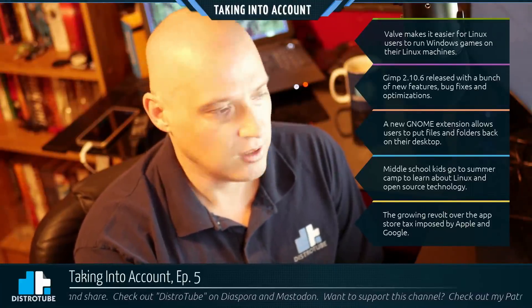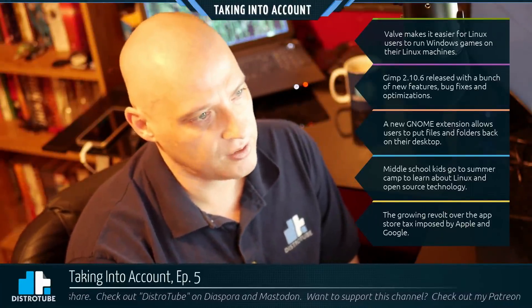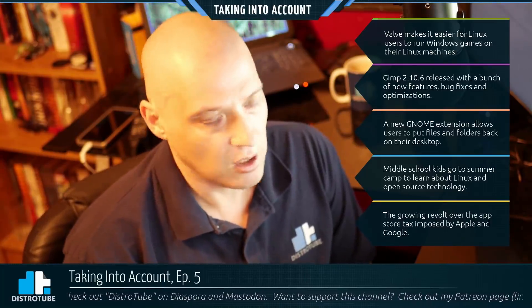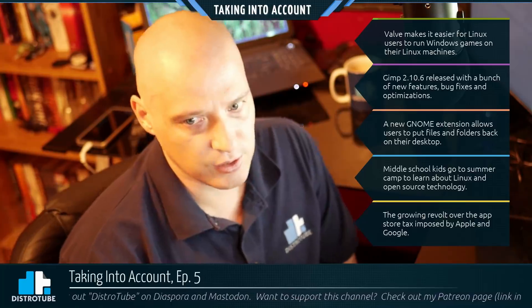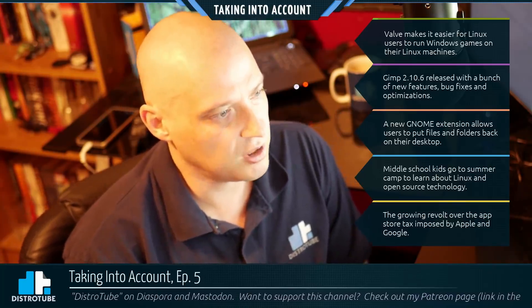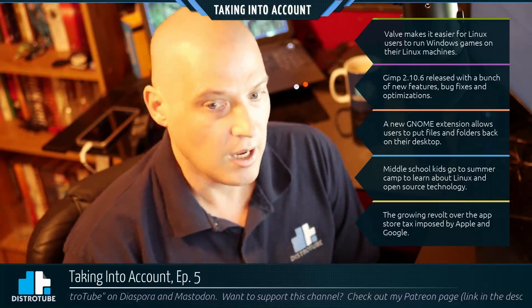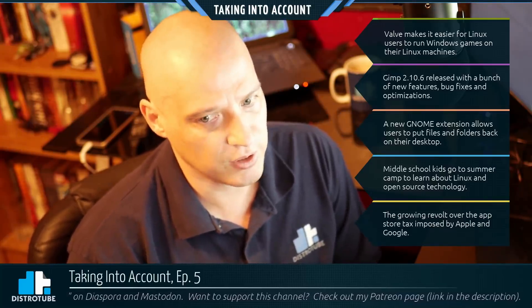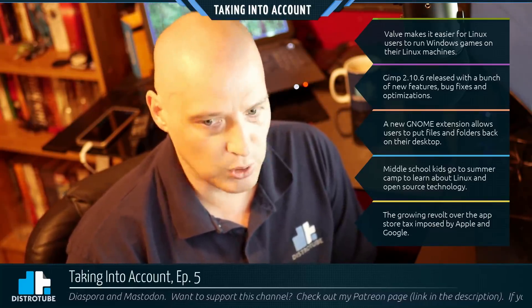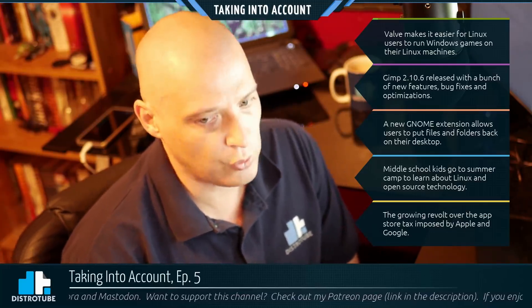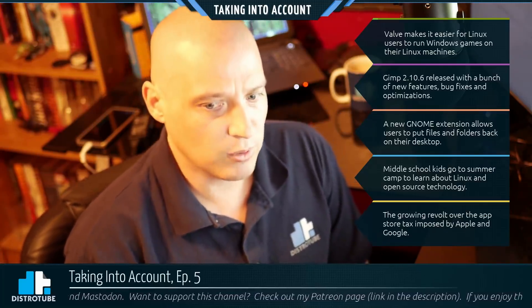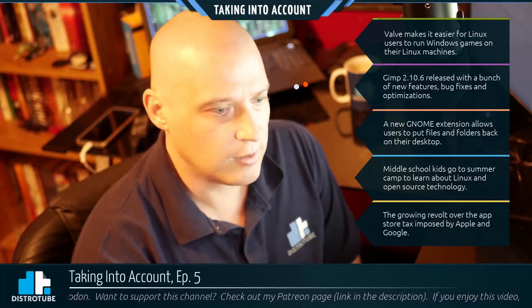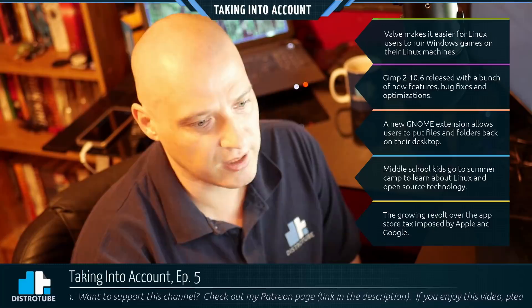This week on Taking Into Account: Valve makes it easier for Linux Steam users to run Windows games on their Linux machines. Also, GIMP 2.10.6 was released with a bunch of new features, bug fixes, and optimizations. A new GNOME extension allows users to put files and folders back on their GNOME desktop. Plus, middle school kids go to summer camp to learn about Linux and open source technology, and the growing revolt over the App Store tax imposed by Apple and Google — five stories that I will be taking into account.